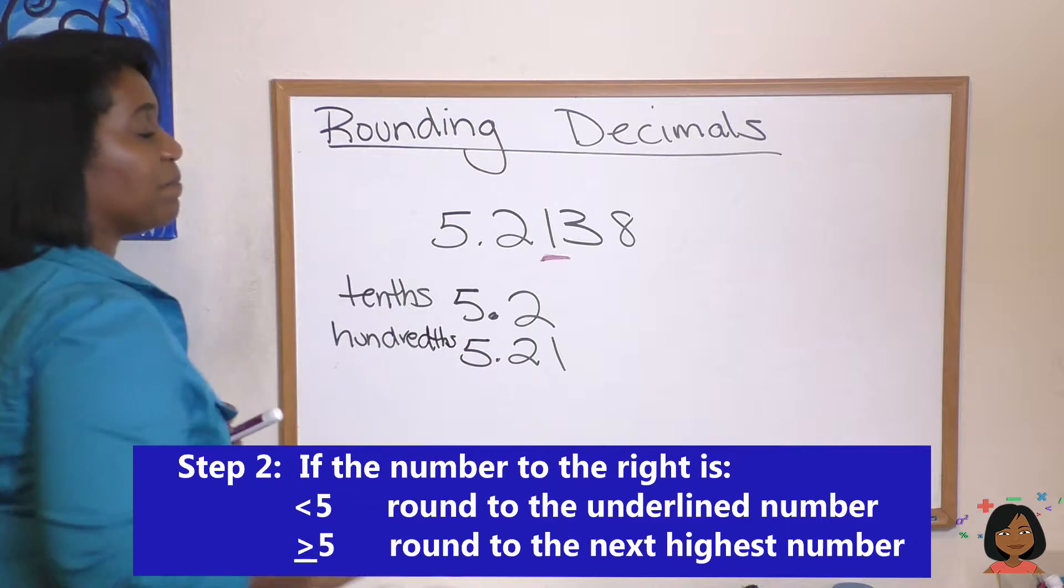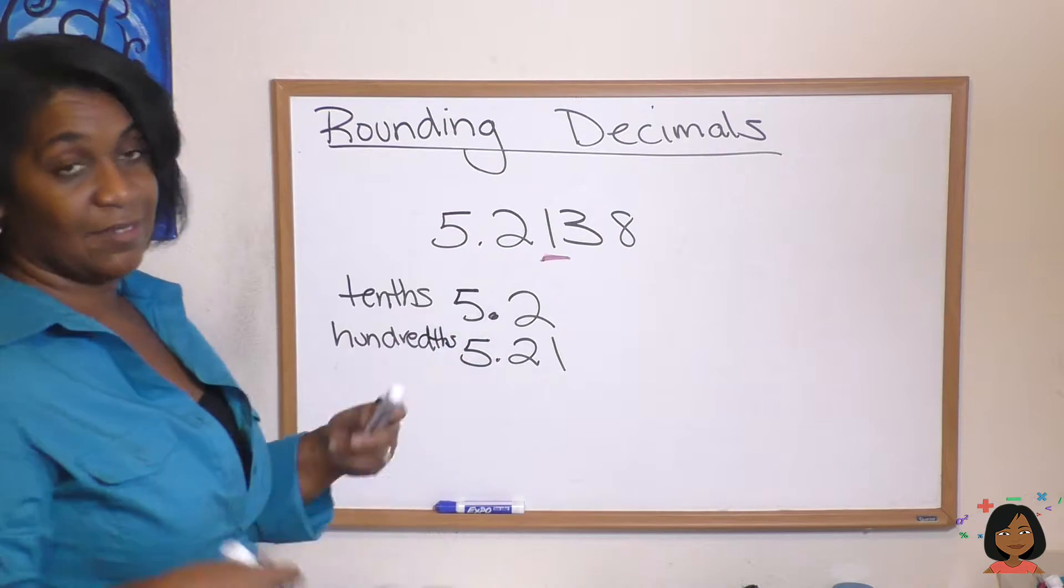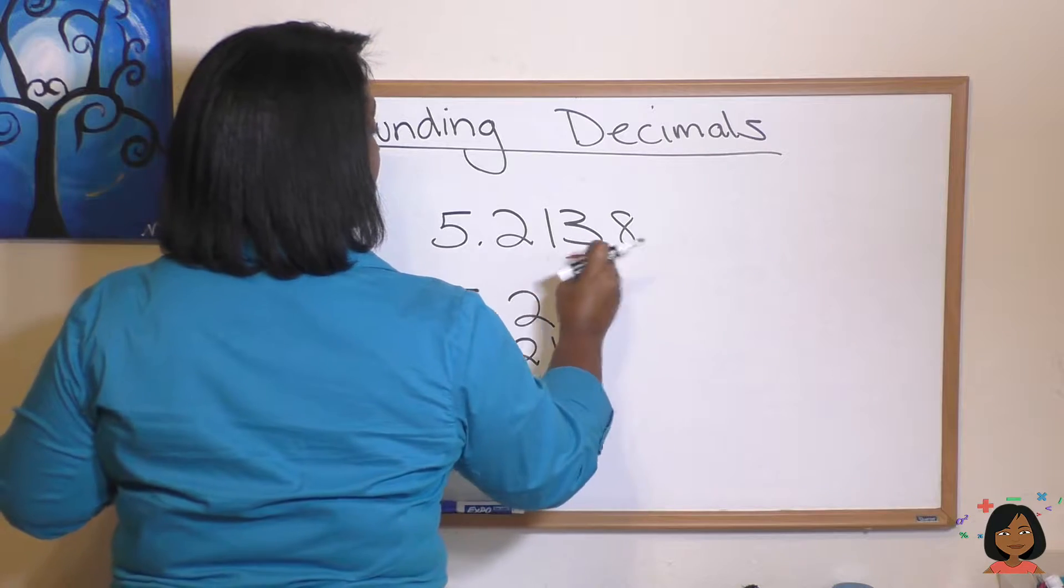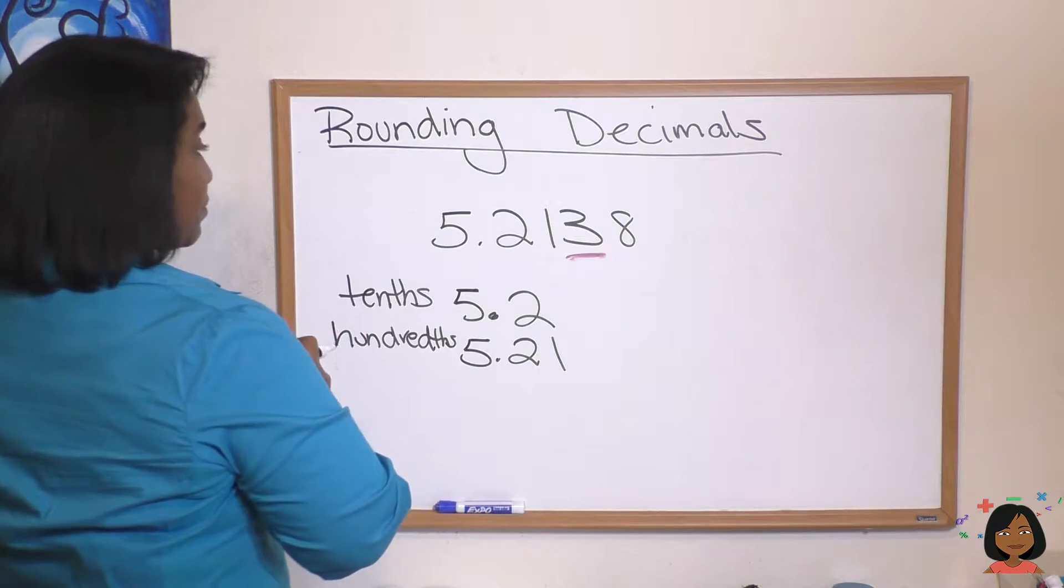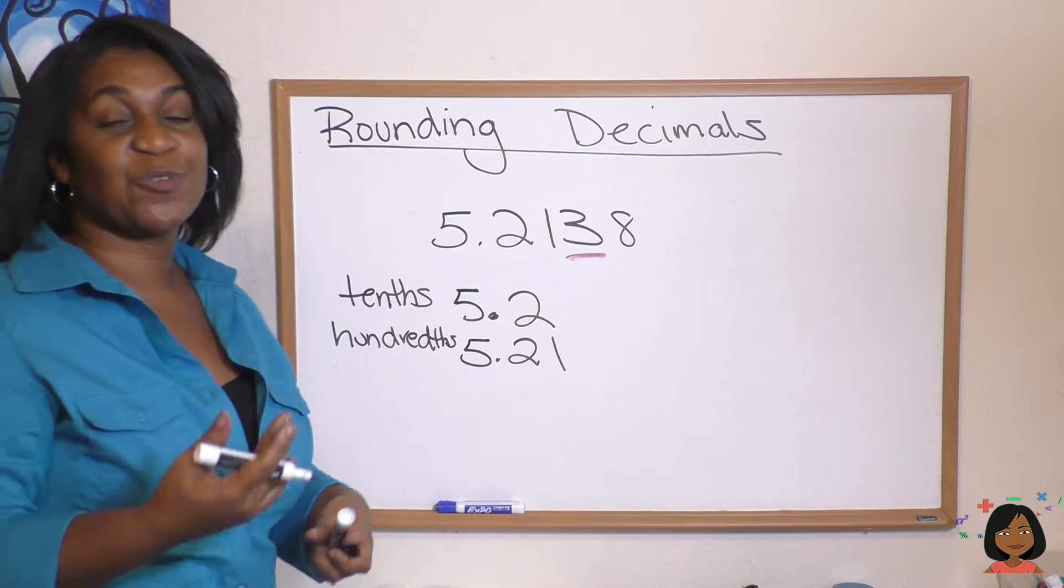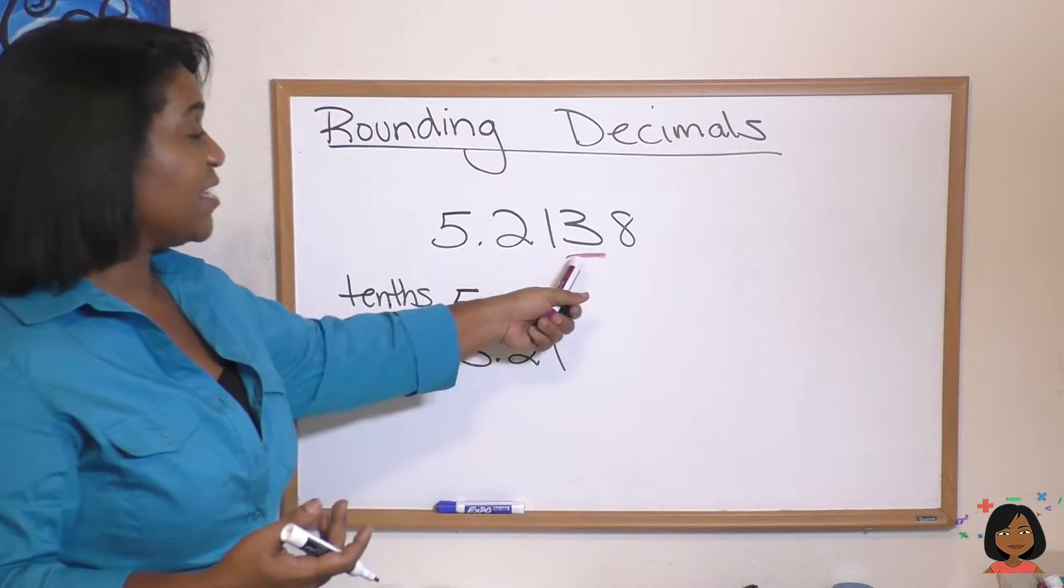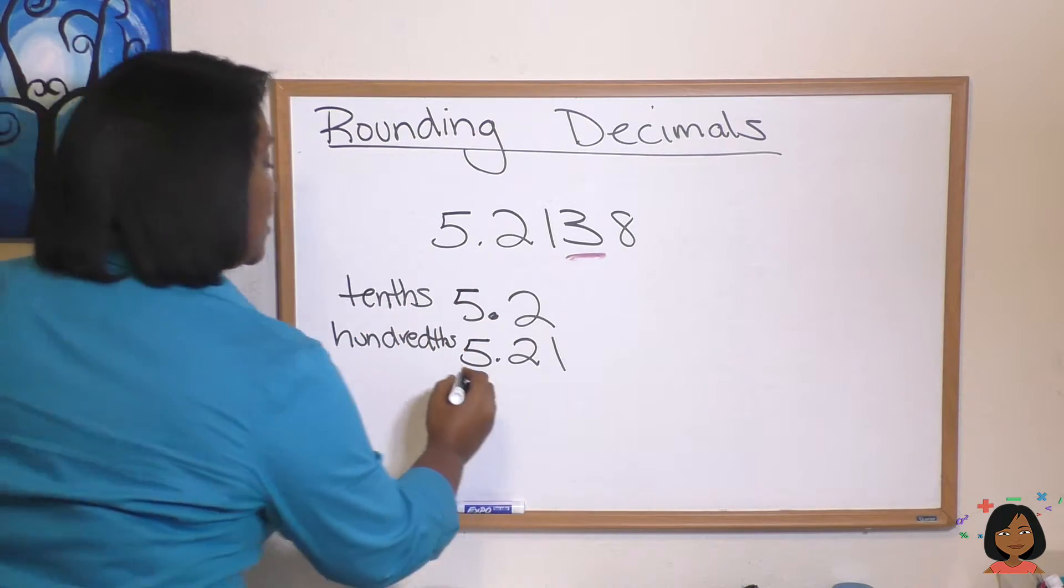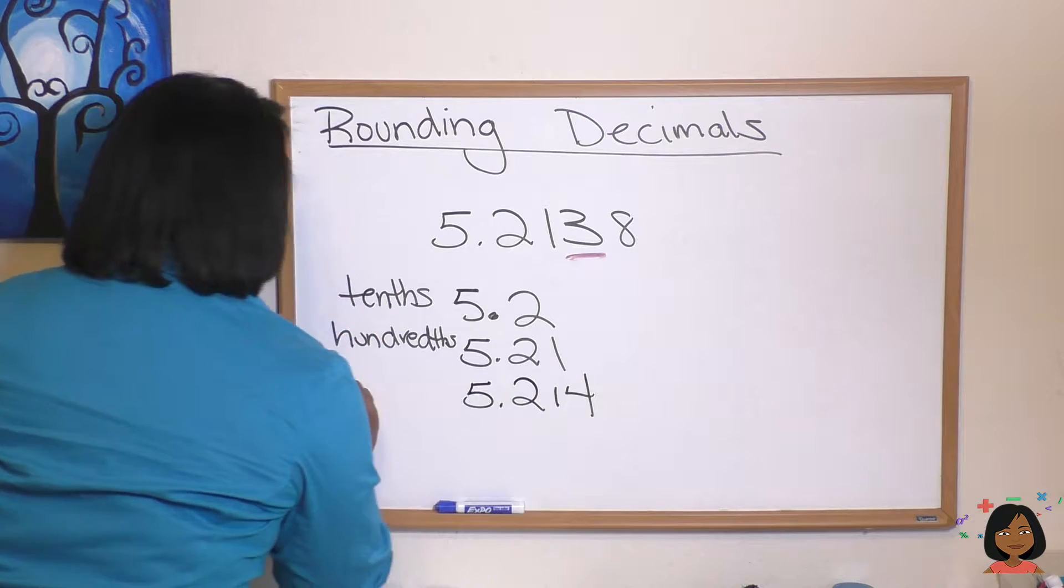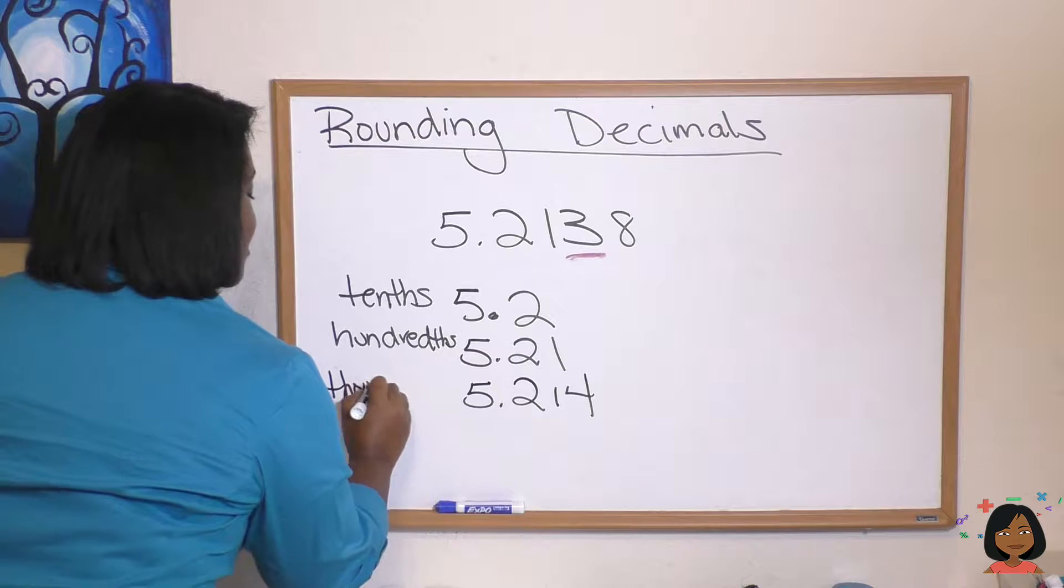All right, and let's just keep going. Let's go ahead and round this to the thousandths place, which means we're going to highlight the 3. I'm going to look to the right and what do I see? I see an 8, which means we're going to round up. This number 3 goes to a 4, so it'll go to 5.214. That's our thousandths place.